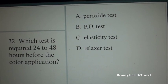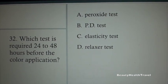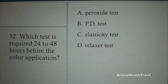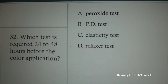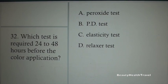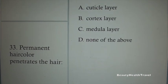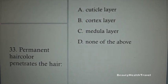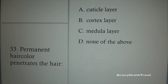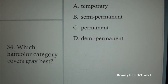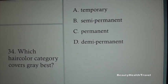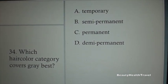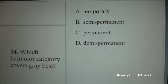Question 30: Which hair color category removes the natural pigment from the hair and deposits new pigment — it is a lift and deposit color: A. Temporary, B. Semi-permanent, C. Permanent, D. Demi-permanent. Question 31: What is permanent hair color mixed with to process on the hair? A. Hydrogen peroxide, B. Aluminum, C. Sodium hydroxide, D. Sodium hypochloride.